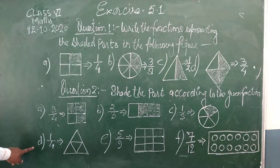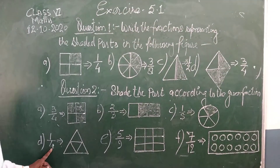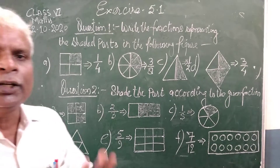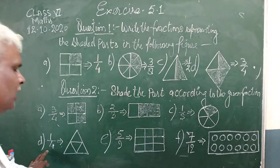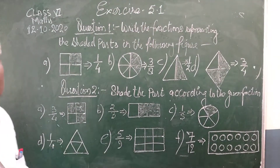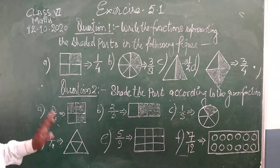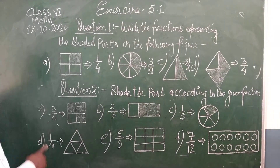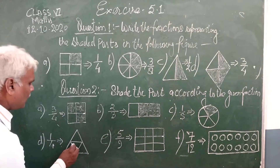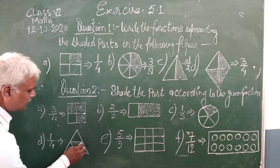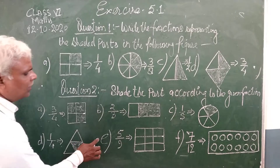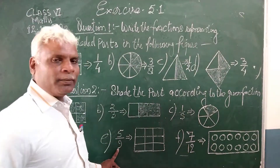Here is the fraction with numerator 3 and denominator 4. It means this figure is divided into 4 equal parts. The denominator is 4, so this figure is divided into 4. Parts are shaded — 4 equal parts are shaded.